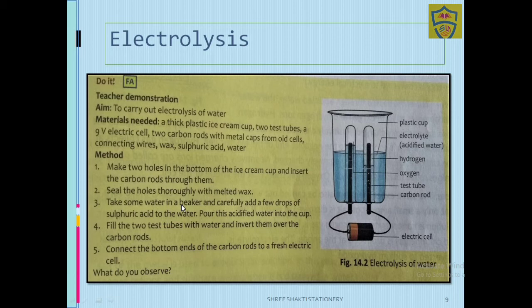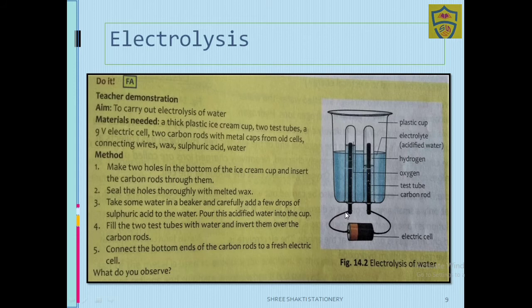Take some water in a beaker and carefully add a few drops of sulfuric acid to the water — this is called acidified water. Pour this acidified water into the cup. Fill the two test tubes with water and invert them over the carbon rods.